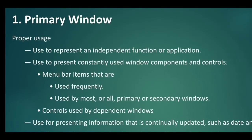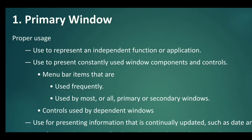The first type is the primary window. Its usage: it is used to represent an independent function or application — for example, functions like paragraph formatting, numbering, line spacing, or any other formatting option. These are independent functions. If you click on a particular option, it will open another window. The primary window is also used to present constantly used window components and controls, such as menu bar items used frequently by most or all users.